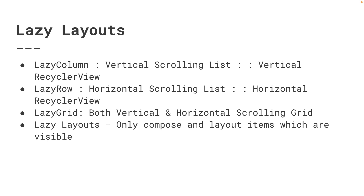Lazy column produces a vertical scrolling list, lazy row produces a horizontal scrolling list, and lazy grid provides both vertical and horizontal scrolling. The advantage of lazy layout is that it will only compose and layout items which are visible in the component's viewport, which significantly improves performance.